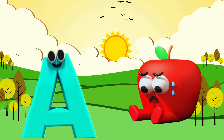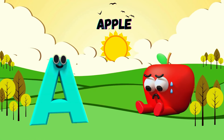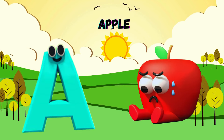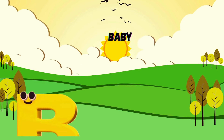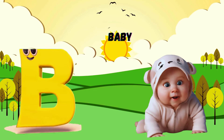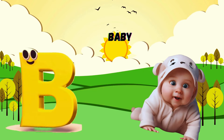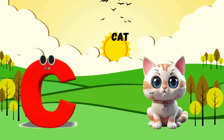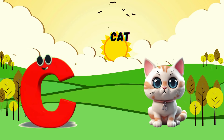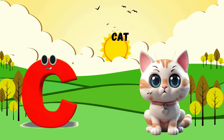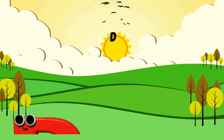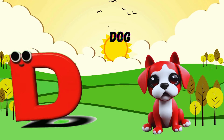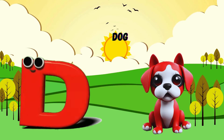A is for Apple. A, A. Apple. B is for Baby. B, B. Baby. C is for Cat. C, C. Cat. D is for Dog. D, D. Dog.